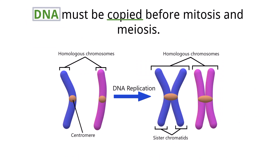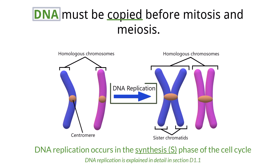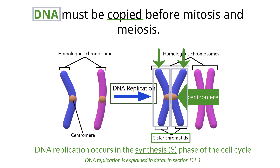Before a cell divides, the DNA must be copied to ensure that each daughter cell has the genetic material necessary. This occurs in the S phase, or synthesis phase, of the cell cycle. The actual process of DNA replication is covered in another video. DNA replication produces double-stranded chromosomes, and each strand is called a sister chromatid — they are genetically identical and held together by a centromere. A centromere is a DNA sequence that can be seen as a constricted area of a chromosome. During division, the two sister chromatids are pulled apart, with one going to each daughter cell.